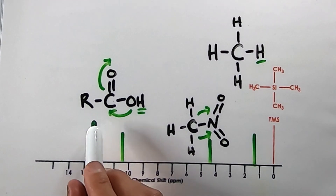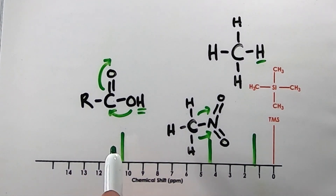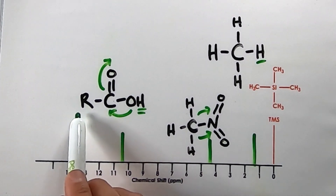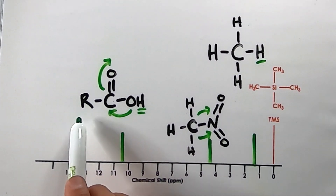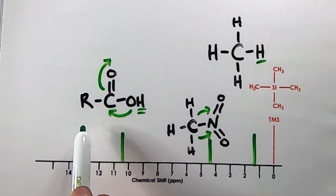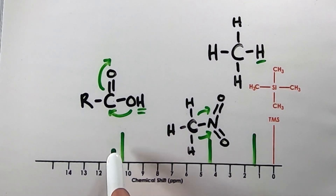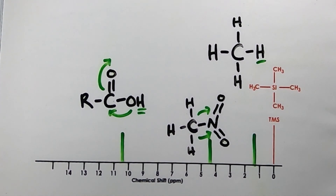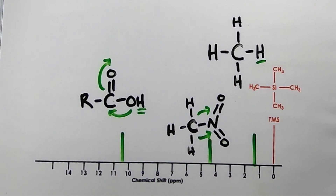Indeed, we tend to find a peak for this hydrogen between 10 and 12. There might be some splitting if the carbon group has hydrogens, but splitting of peaks on HNMR spectrum graphs is something we'll talk about in another video.